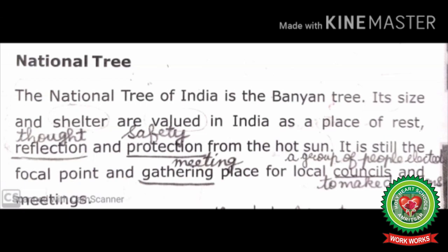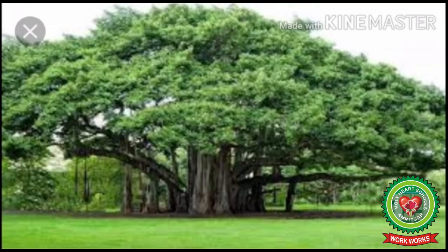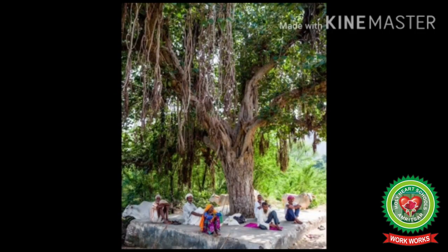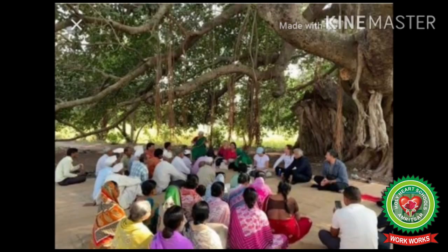It is still the focal point and gathering place for local councils and meetings. Gathering means meeting, councils means a group of people elected to make decisions. As you know, this tree is very big in size — people in villages still sit under the shadow of this tree and it also protects them from the heat of the sun. It is still a focal point and gathering place for meetings.